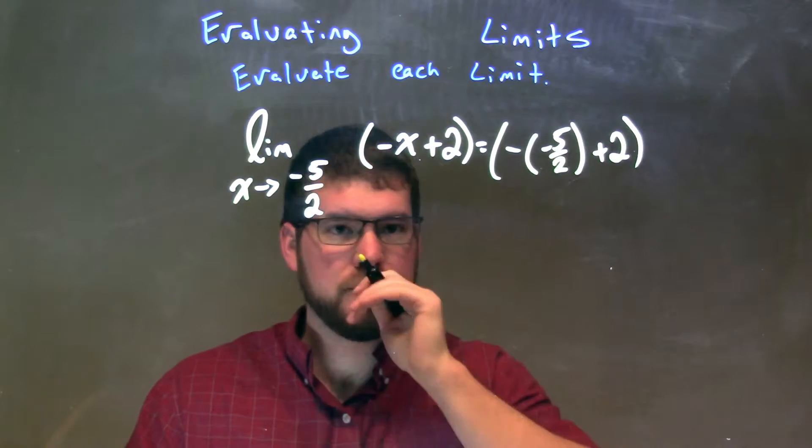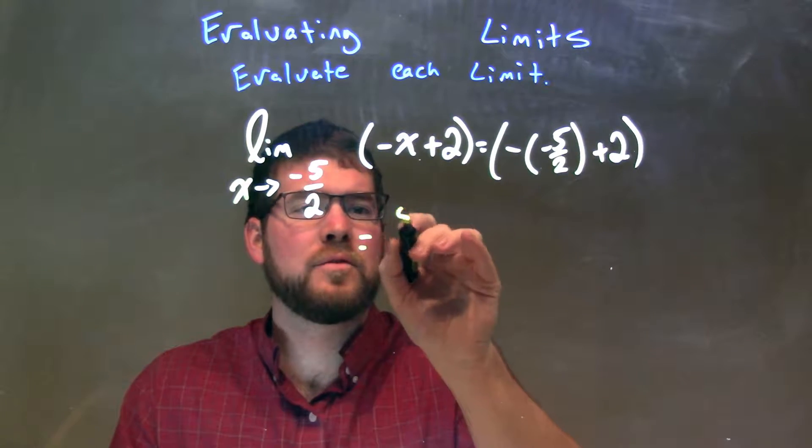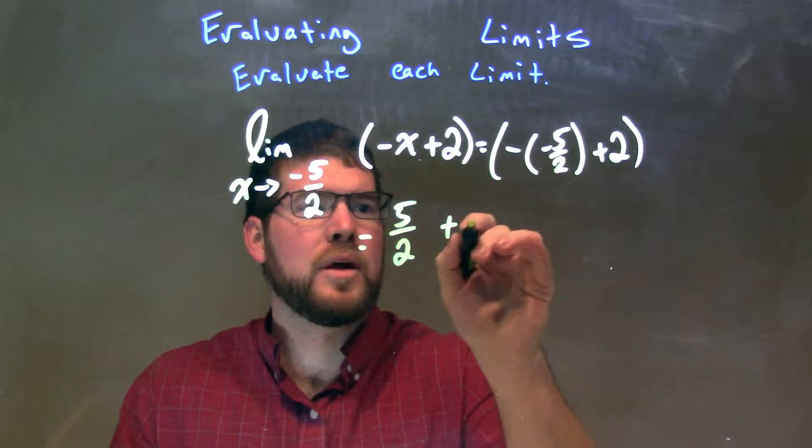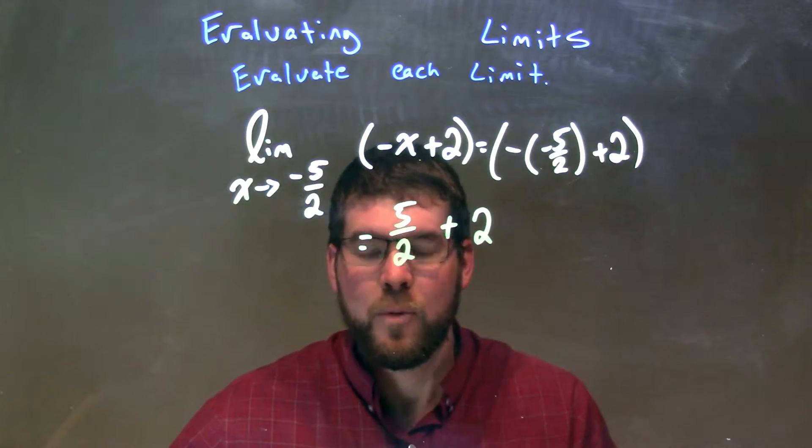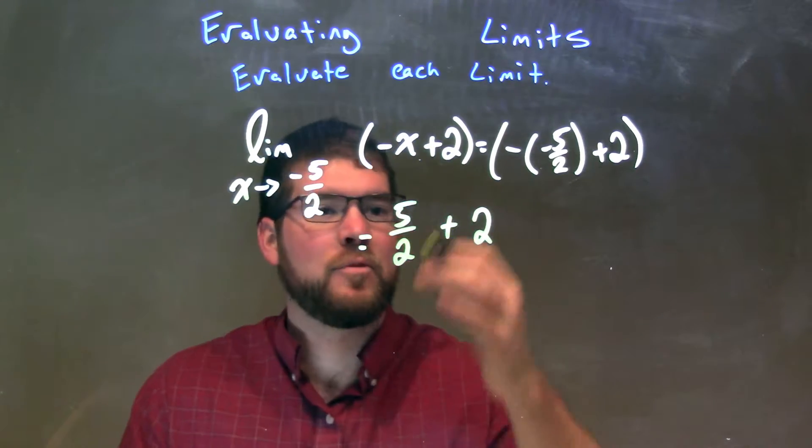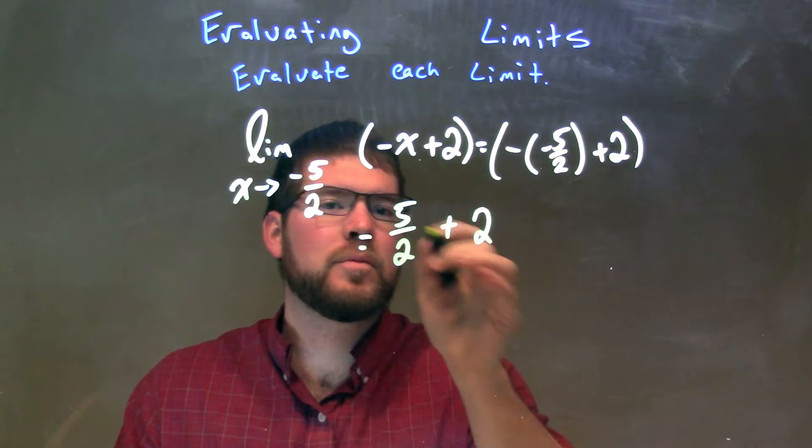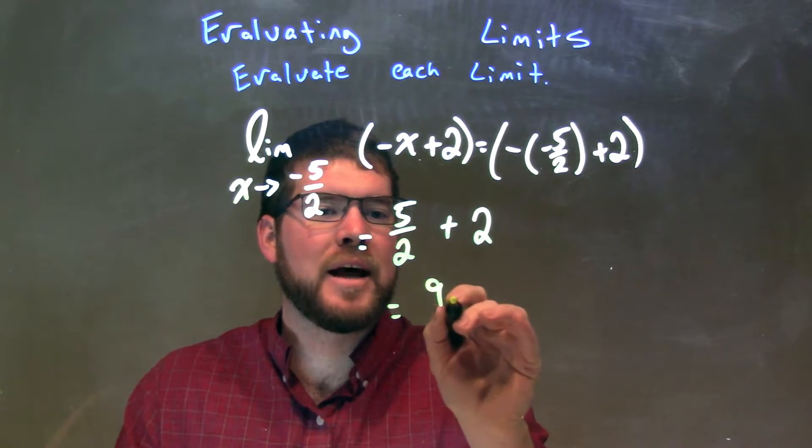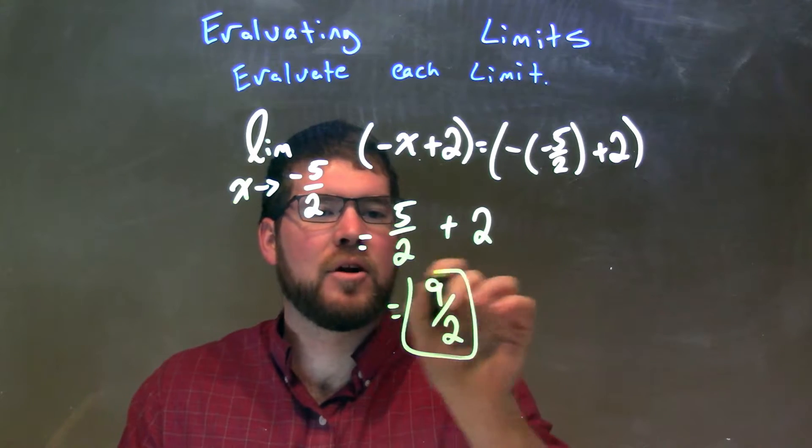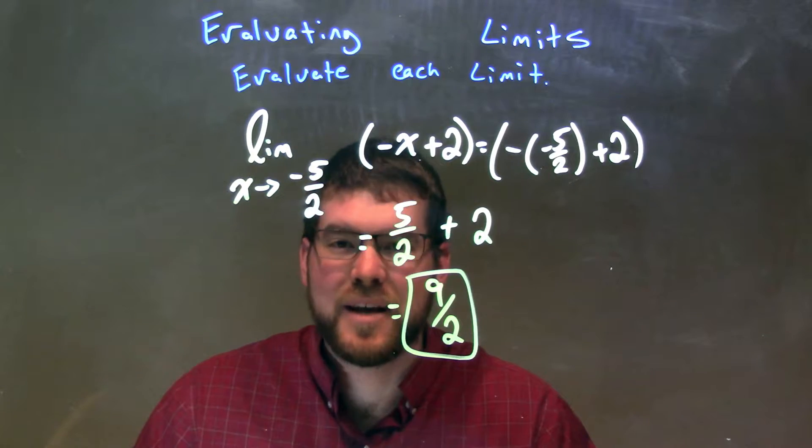Now, simplify it down here. A negative times a negative is positive, so we have positive 5 halves plus 2. Hopefully, we're at a point now where we can add 5 halves plus 2, 2 really being 4 halves, right? So, 4 halves plus 5 halves is a good old 9 halves. And there we have it. Our limit is equal to 9 halves.